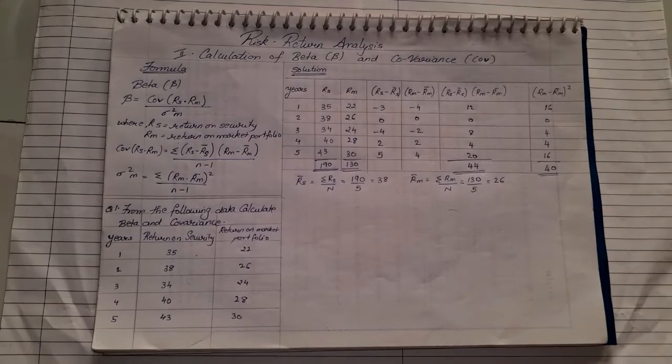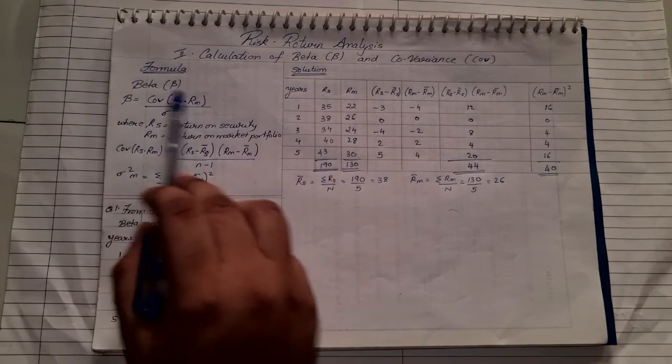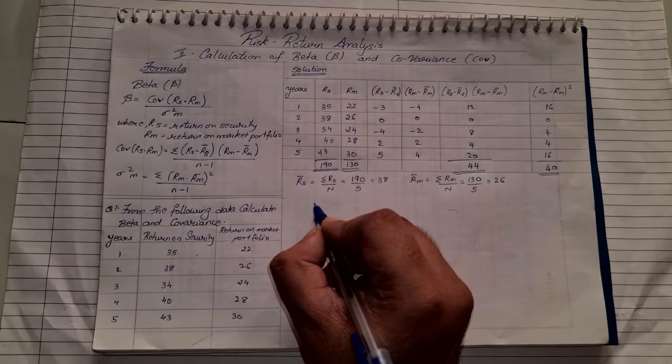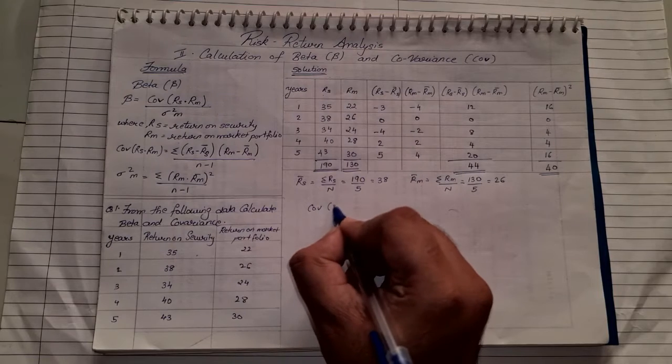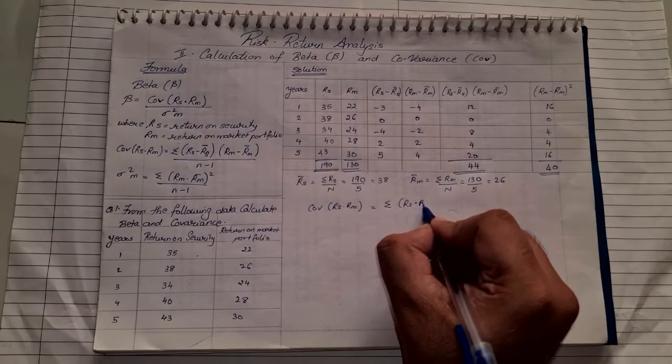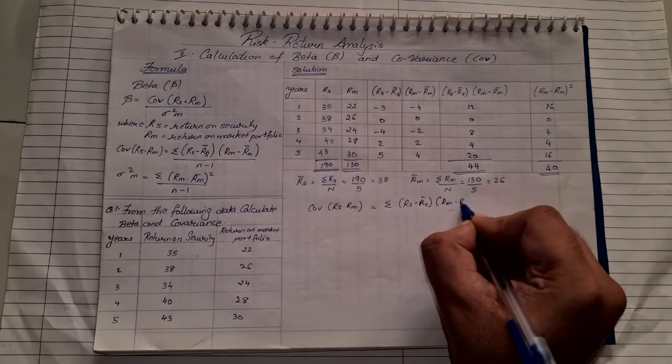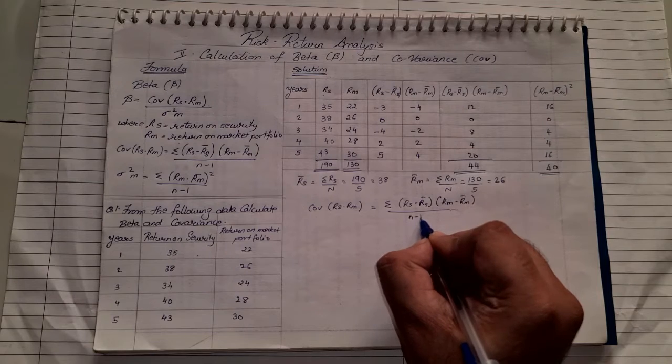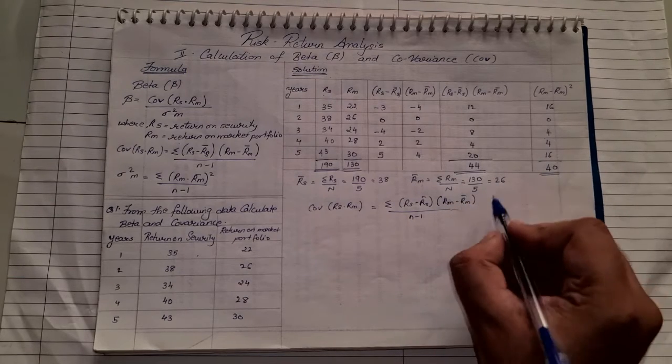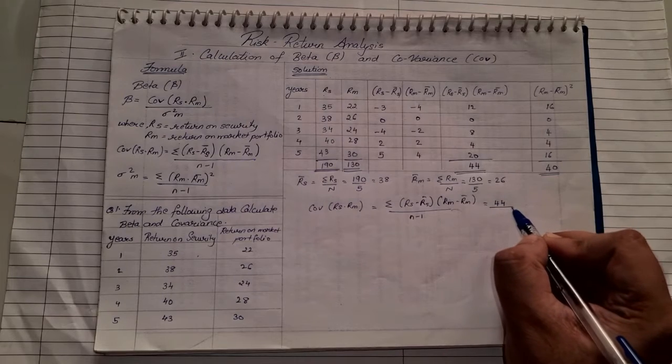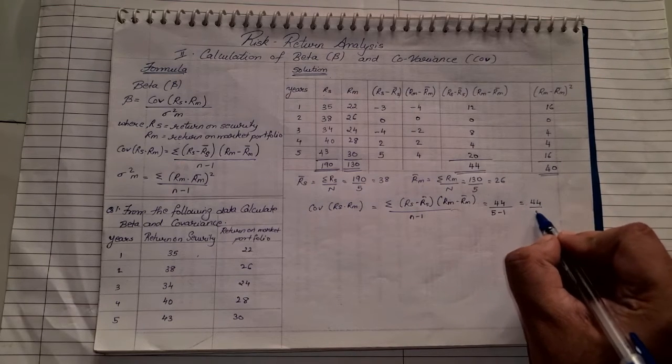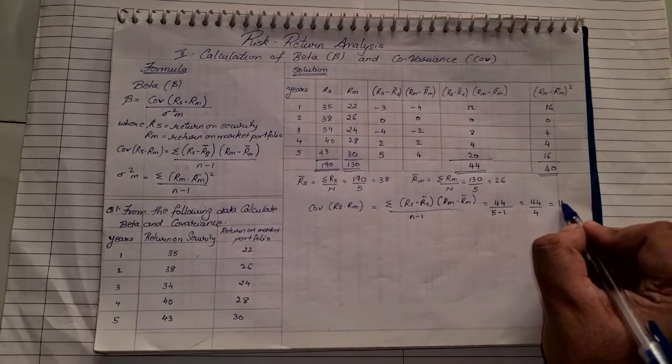With this, our entire table is complete. Now we just have to apply the formula. In order to get beta, first I need to find the covariance, because the numerator is covariance. The covariance formula is Σ(RS - R̄S)(RM - R̄M) / (N-1). Now (RS - R̄S)(RM - R̄M) total is 44, upon N = 5 minus 1. So that is 44/4. So our covariance is 11.